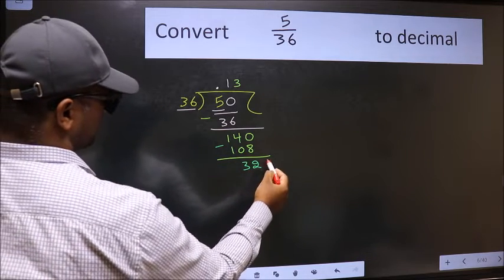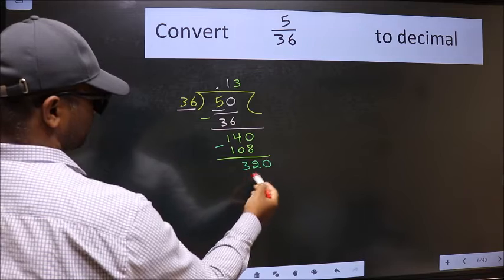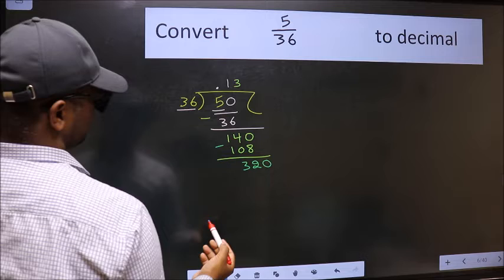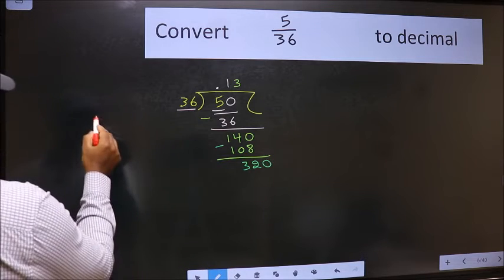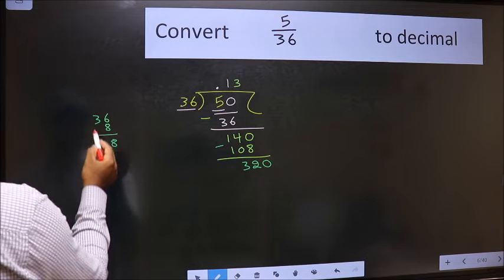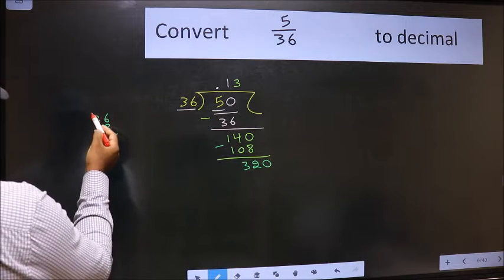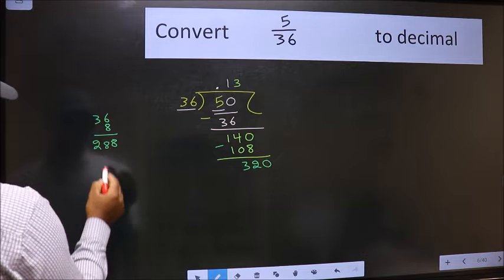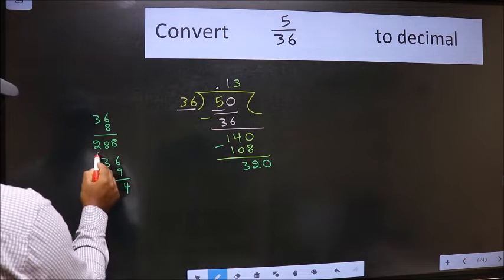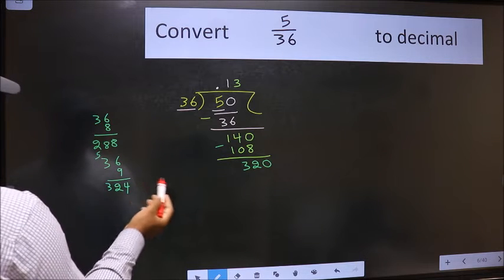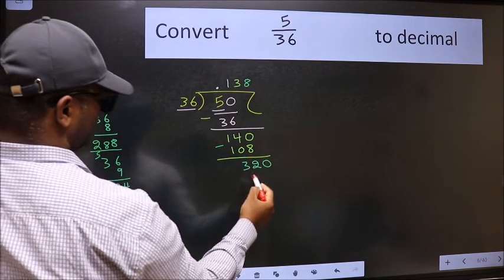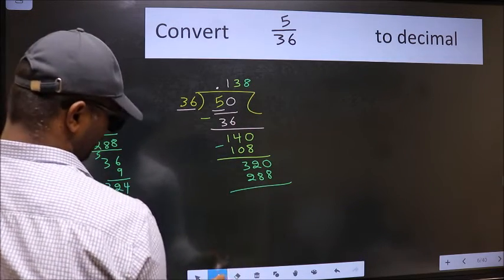32 is smaller than 36 and we already have the decimal, so directly take 0. So 320. A number close to 320 in the 36 table is... let's check with 8: 8×6=48... no, so take 9, 4×5... 324 is exceeding, so we should take 8. 8×36=288. Now we subtract and get 32.